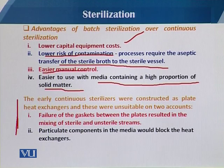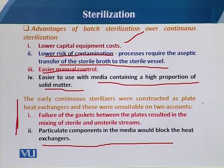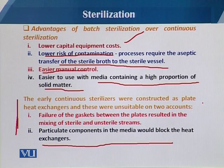Early continuous sterilizers were constructed as plate heat exchangers, but these were unsuitable for two reasons. First, failure of the gasket between the plates resulted in mixing of sterile and unsterile streams — if there is leakage between plates, sterilized and unsterilized medium can mix. Second, particulate components in the medium would block the heat exchangers due to the very small passages, especially with viscous media.